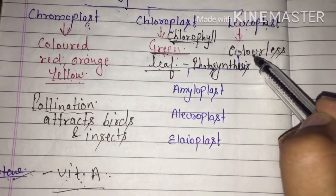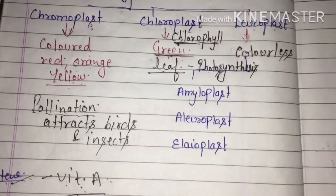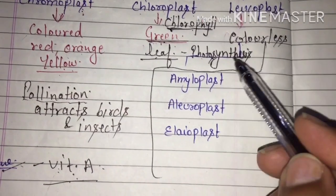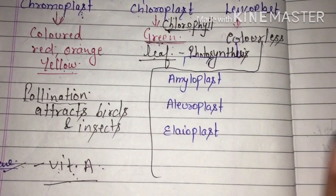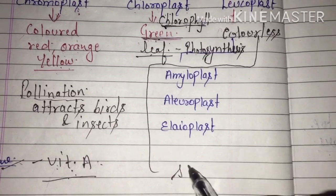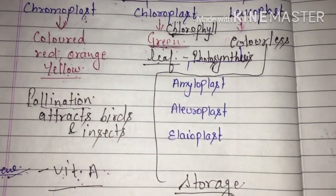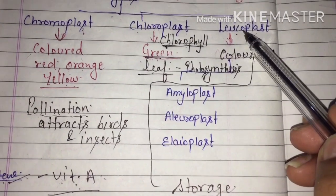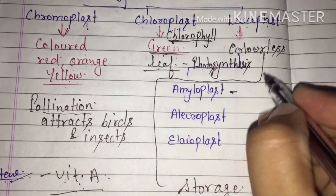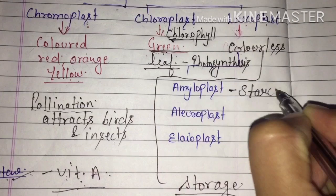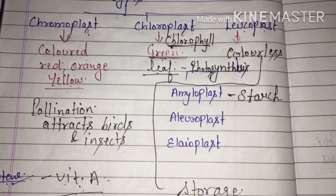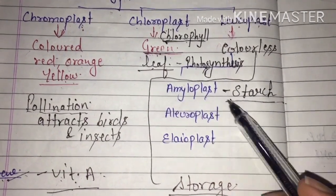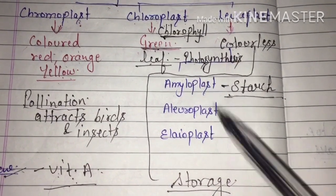Next is leucoplast — these are the colorless plastids. They perform the very important function of storage. Amyloplast, one type of leucoplast, stores starch. Potato is a rich source of starch, so amyloplast is present in potato. Rice is also a rich source of starch, so amyloplast is there in rice too.